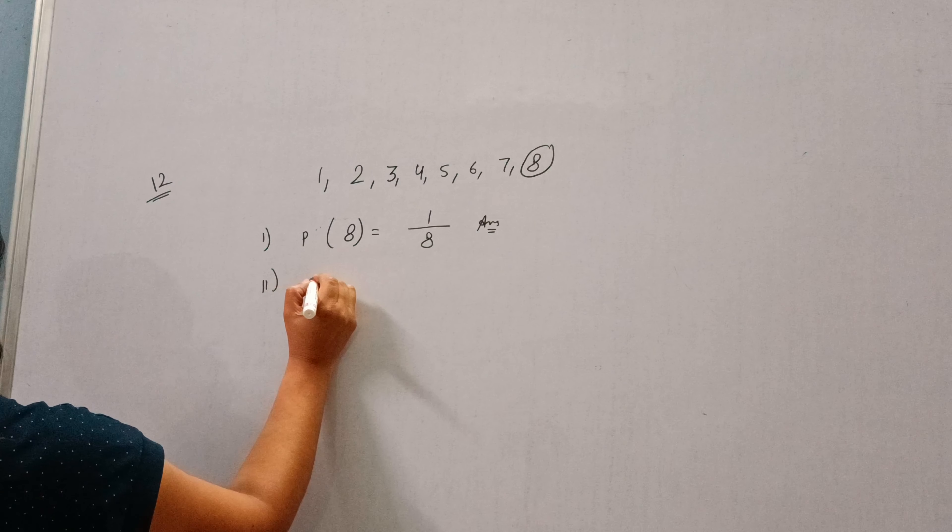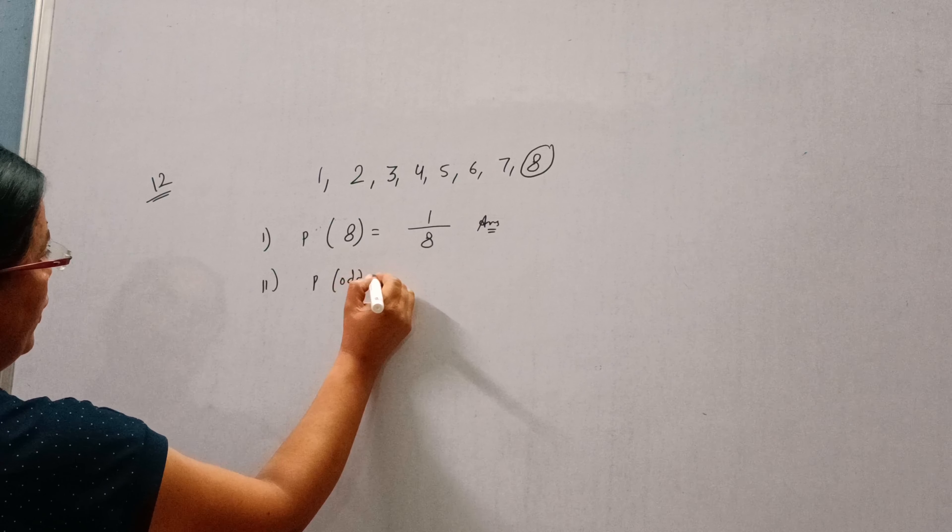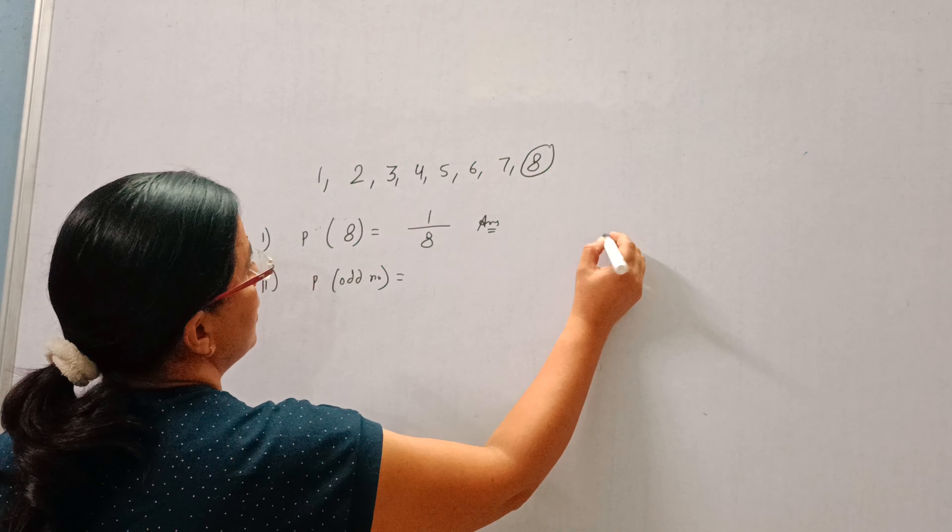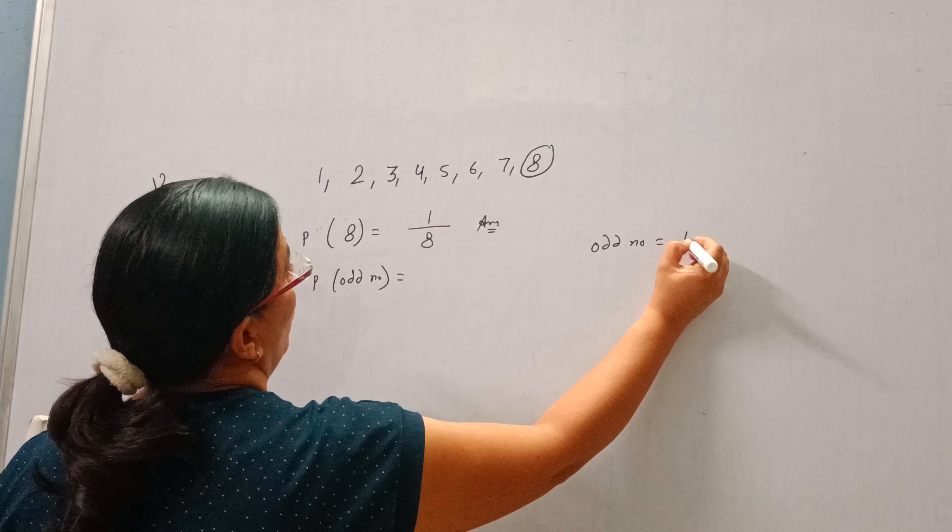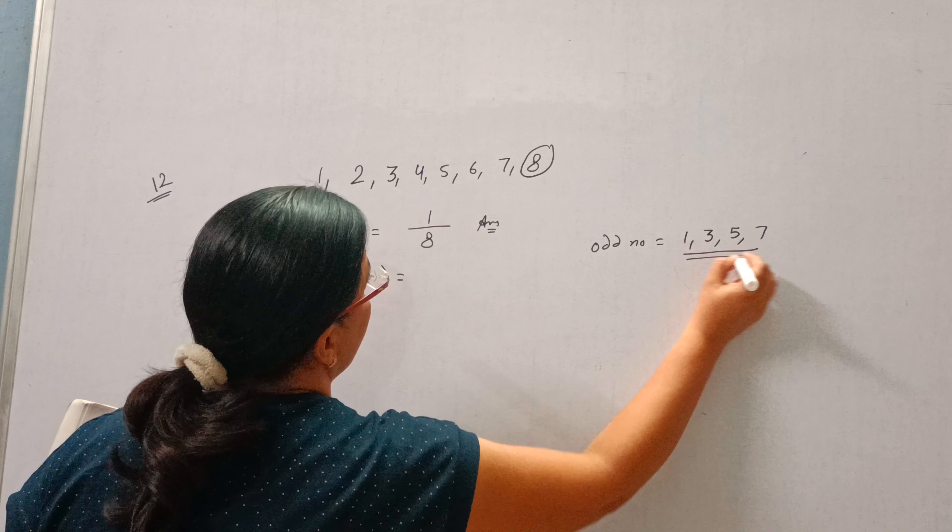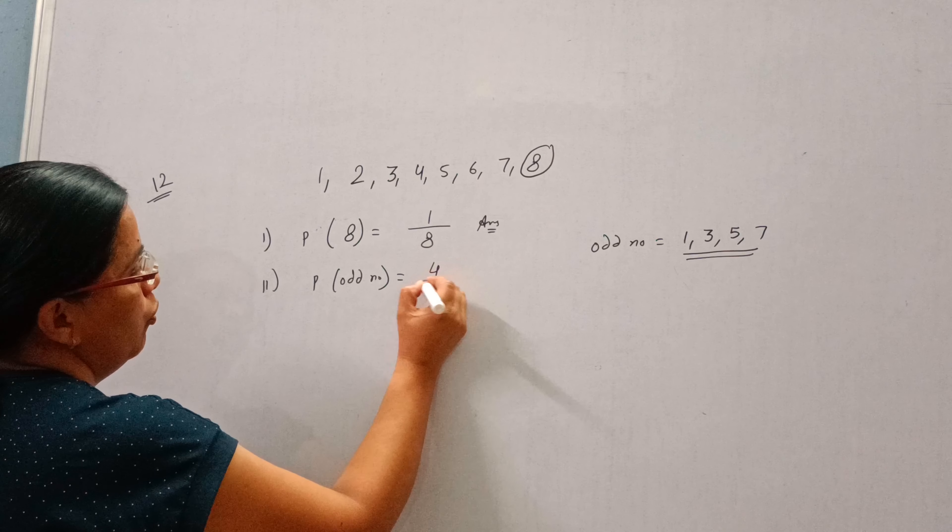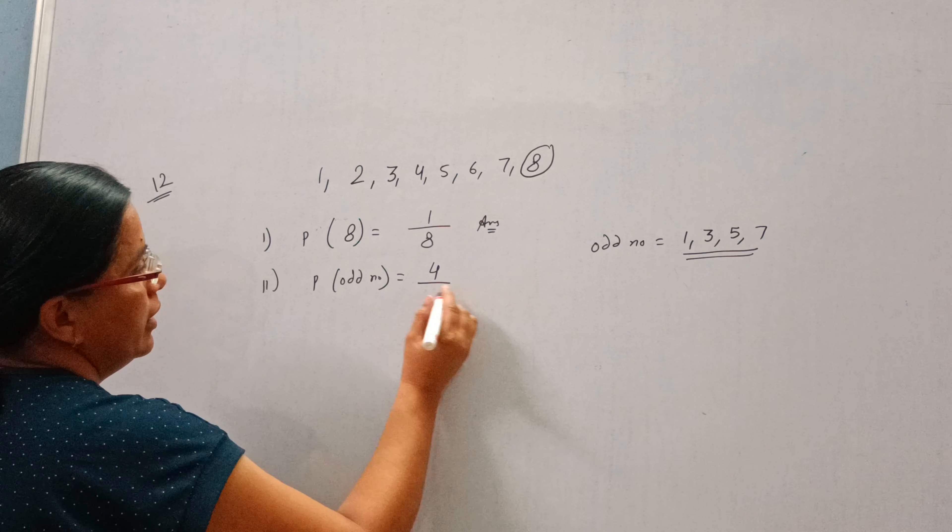Second, an odd number. The odd numbers are 1, 3, 5, 7, which are not divided by 2. So 4 odd numbers are there, total are 8, so probability will be 1 by 2.